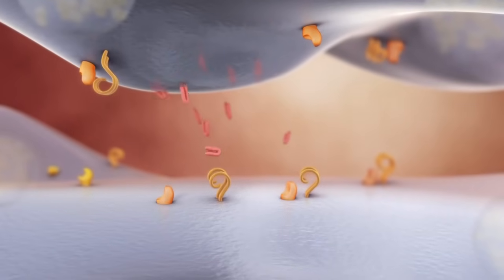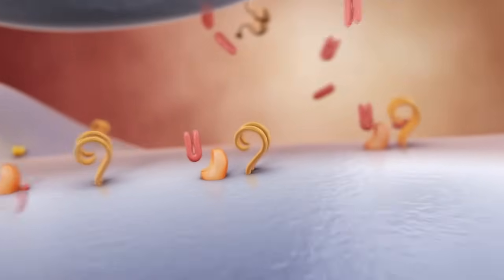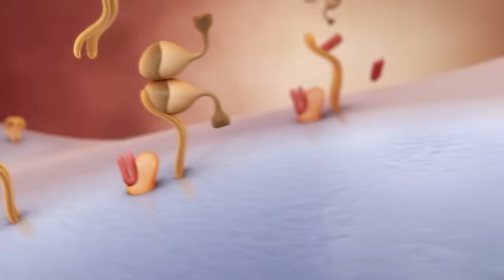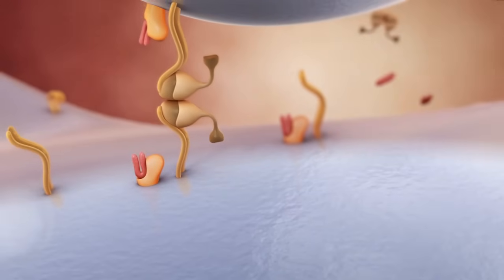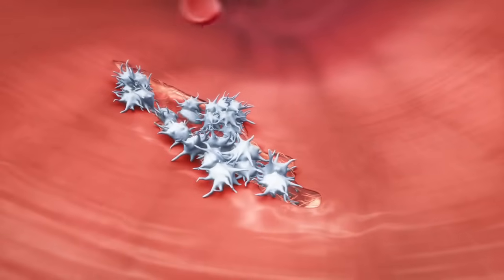Thromboxane is another important mediator of platelet activation and aggregation. Under its influence, the platelets cross-link with each other. These interlocking mechanisms cause platelet activation to snowball. The clot grows rapidly.